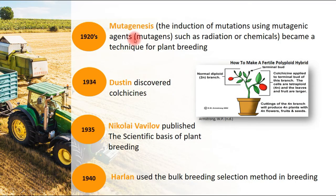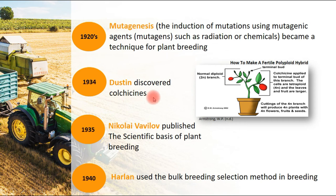In the 1920s, mutagenesis — known as the induction of mutations using mutagenic agents or mutagens such as radiation or chemicals — became a technique for plant breeding. In 1934, Dustin discovered colchicine. Colchicine is applied to the terminal buds of plants to produce a fertile polyploid hybrid.